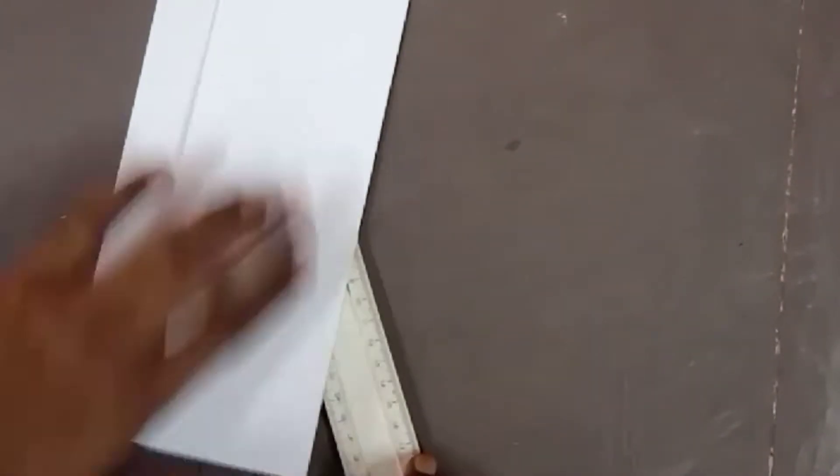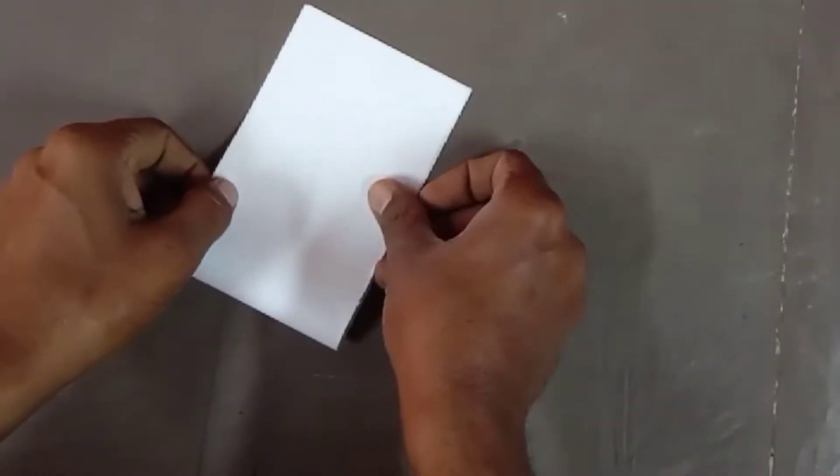Take an A4 size sheet. Cut a long paper strip from it. Fold it to half.